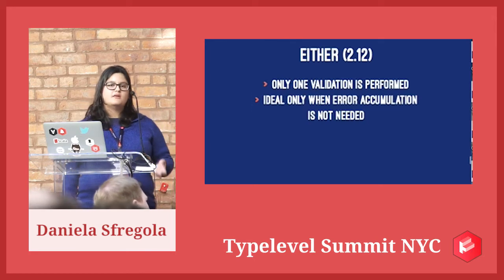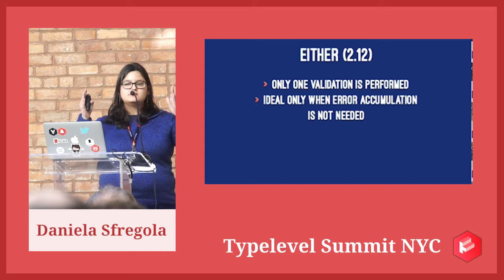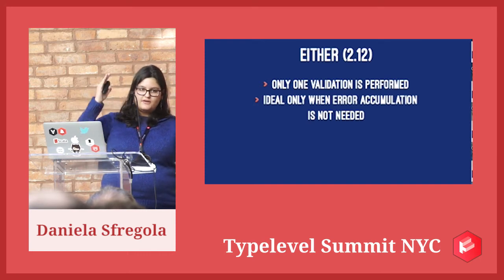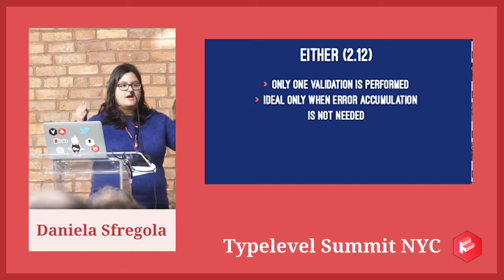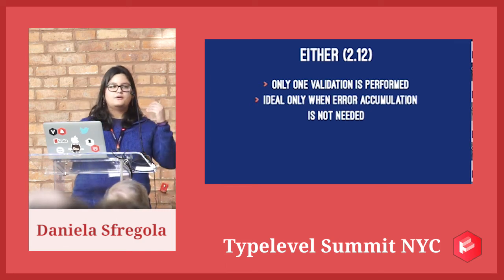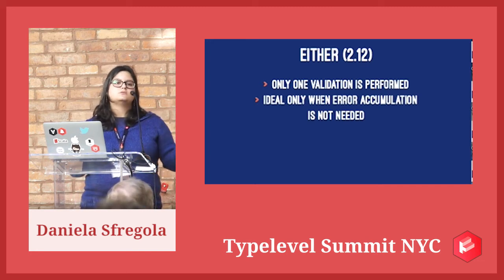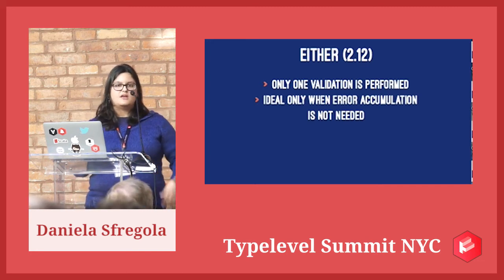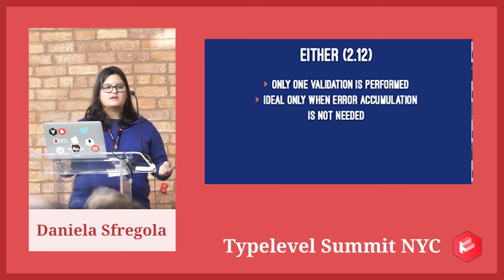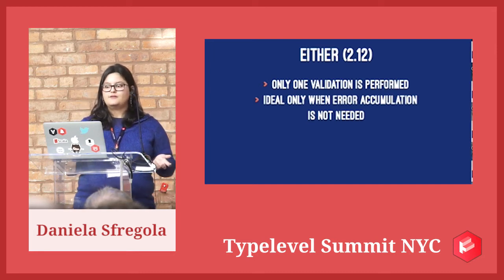The problem with Either in 2.12, to summarize, is that it fails too fast. It will validate until everything is right, and as soon as it finds one validation that is not correct, it stops and doesn't compute the others. Either in 2.12 is great only if you don't need to accumulate errors. If you only have to validate one thing, it's fine. But if you need to validate more, you need something different.